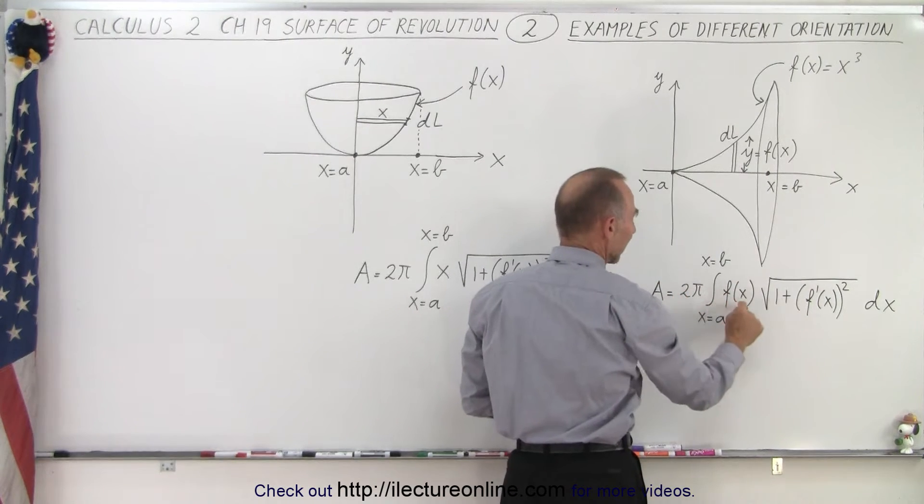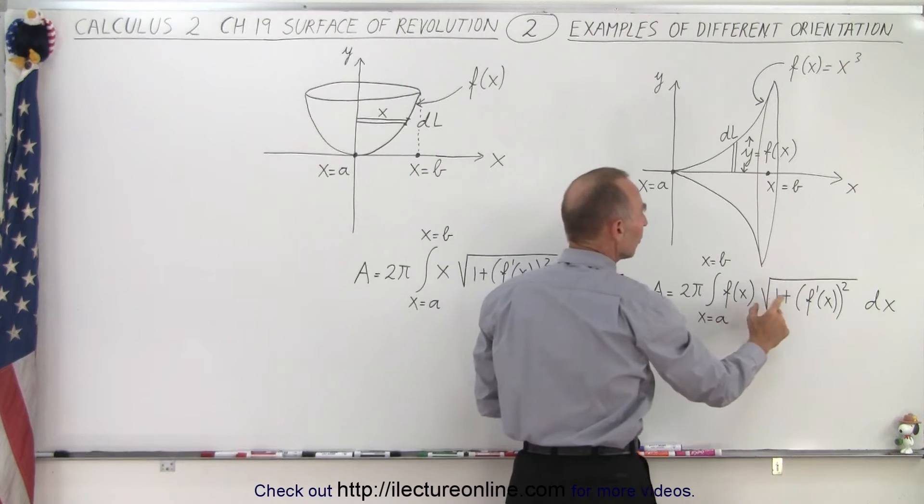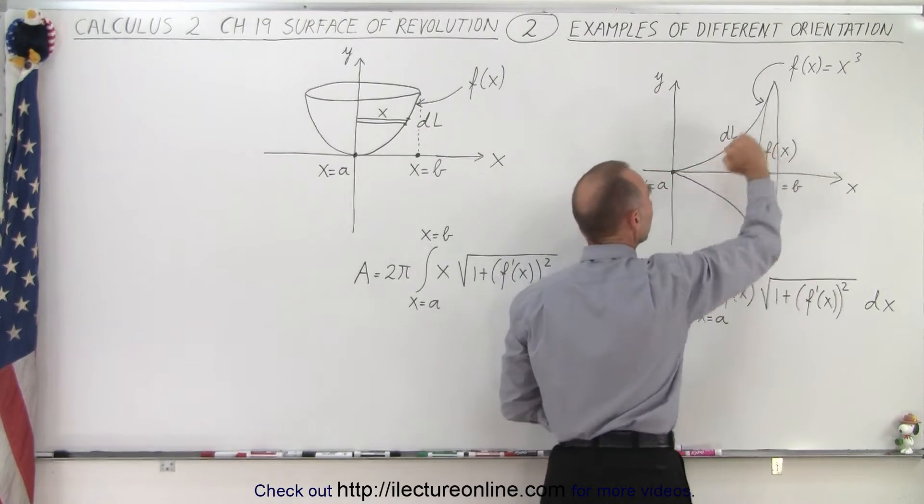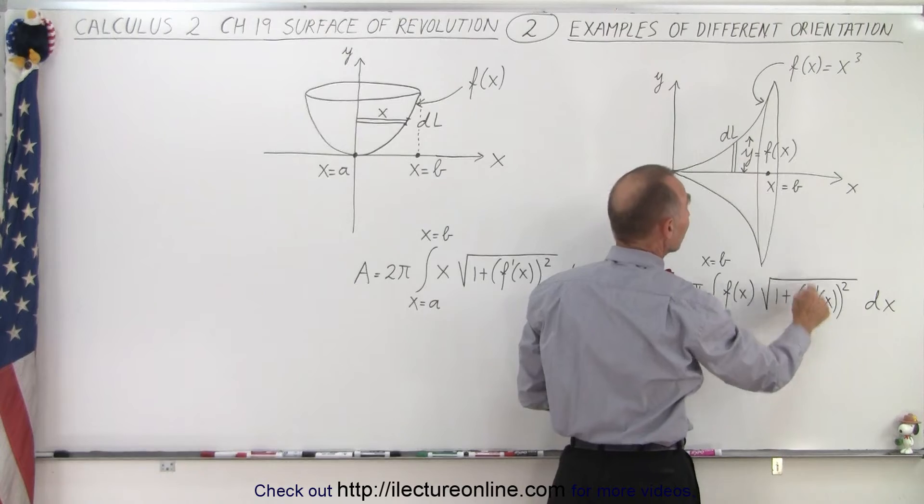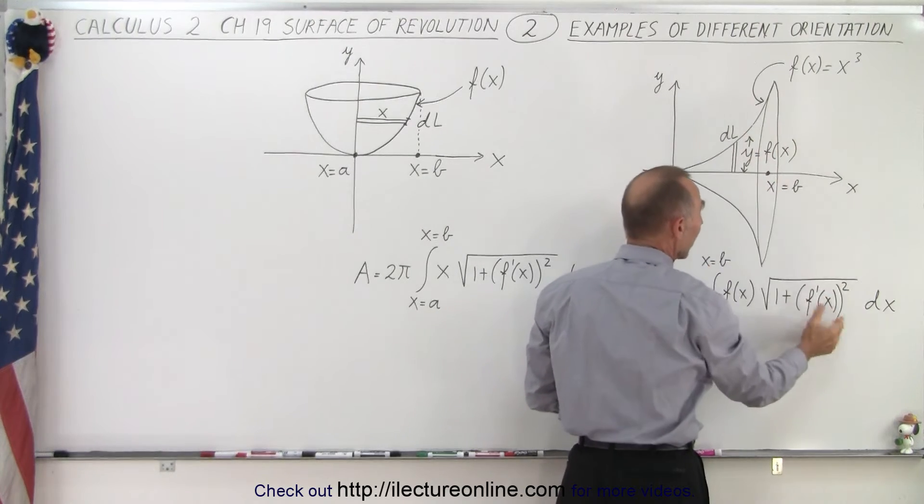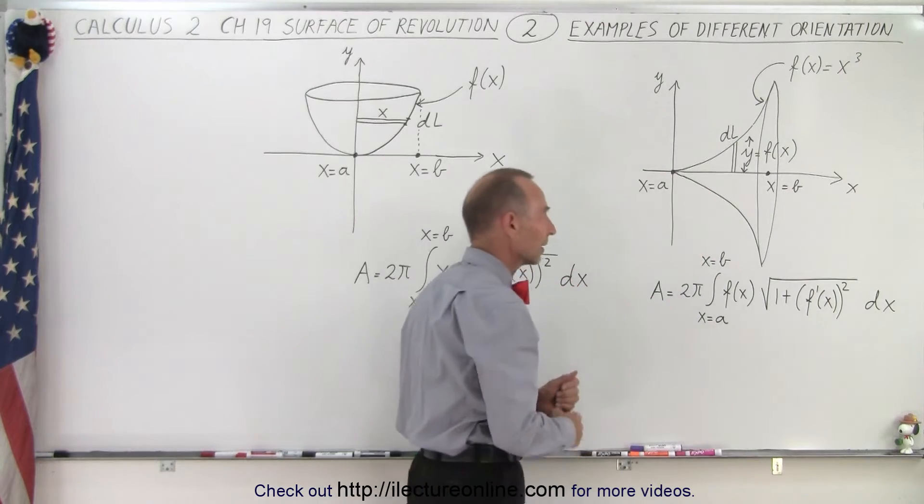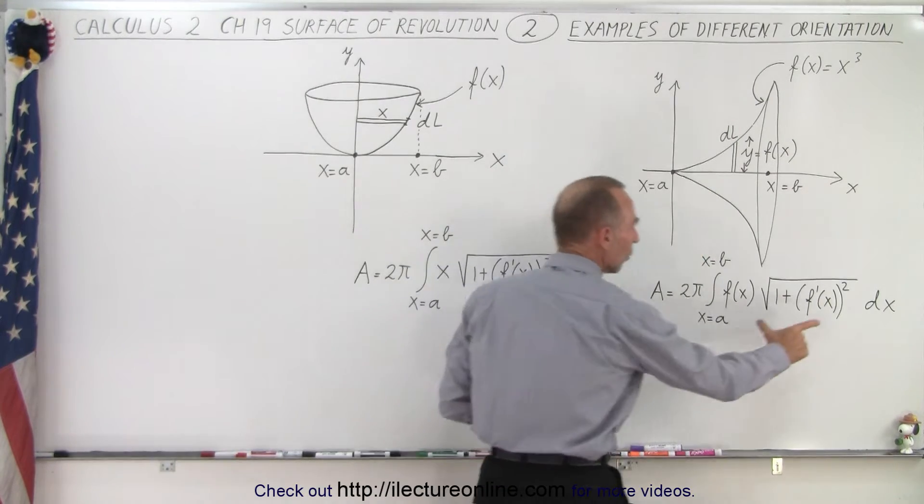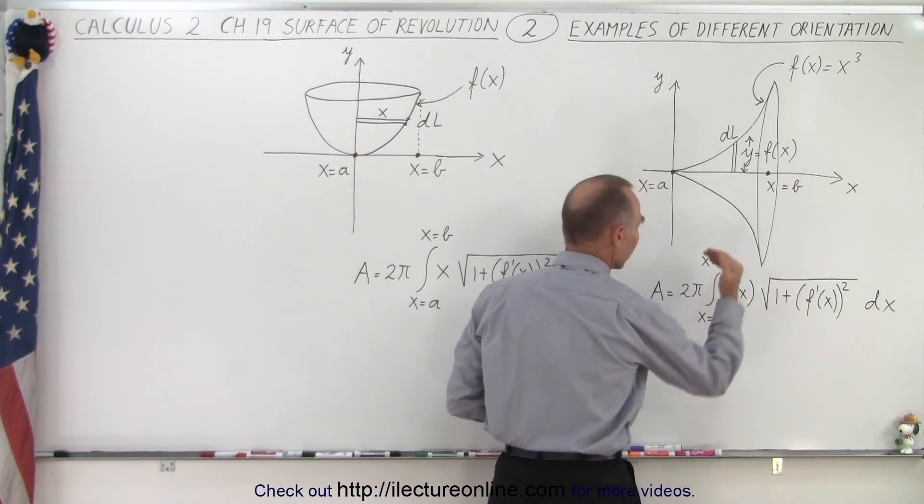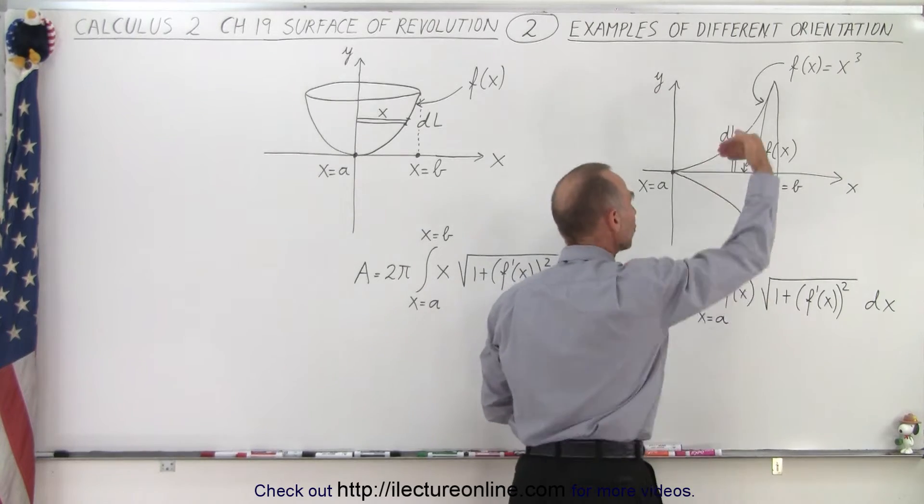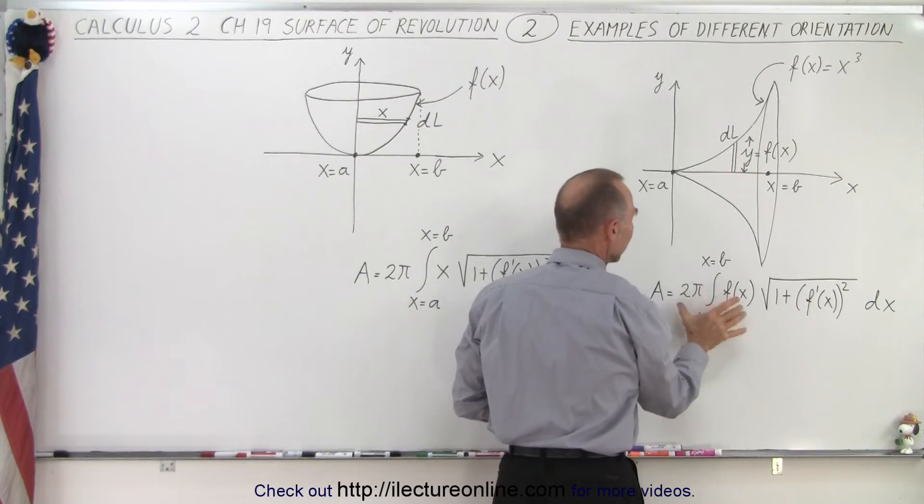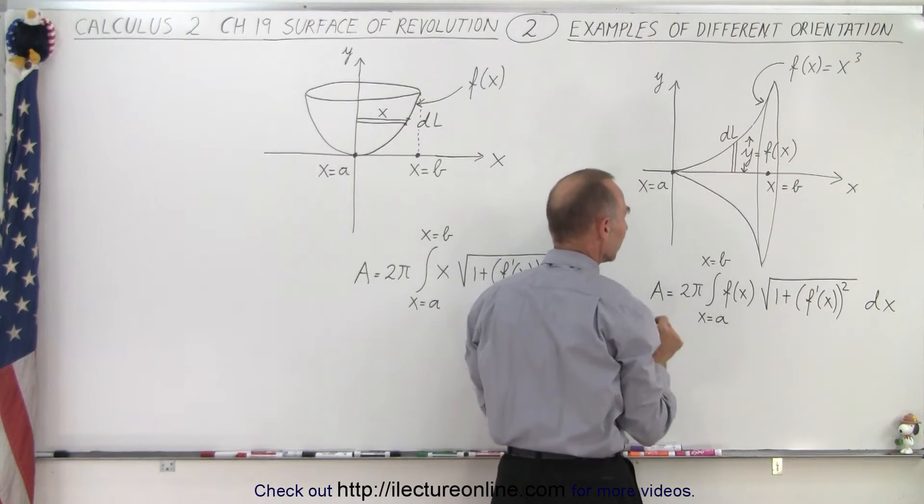So we have two pi times the radius times what we needed to find the arc length, which is the square root of one plus the function of x, take the derivative of that, square that inside the square root sign, and multiply times dx. And so this is the way we get the arc length, and we multiply that times the way in which we then revolve it around the surface to get that small little area element.